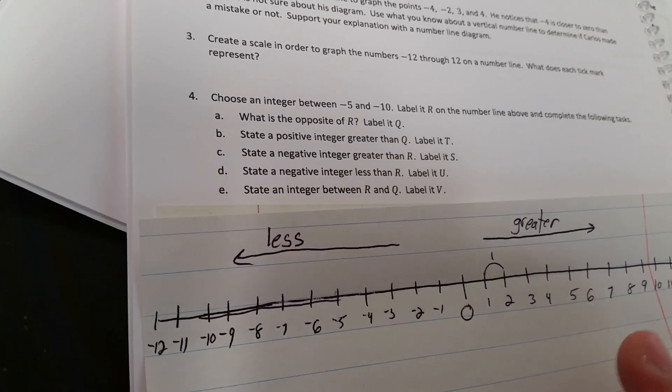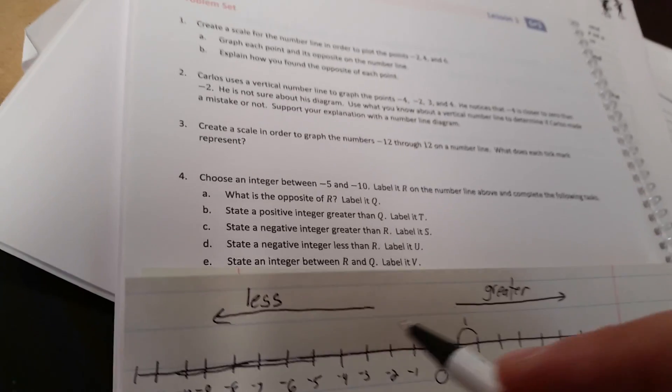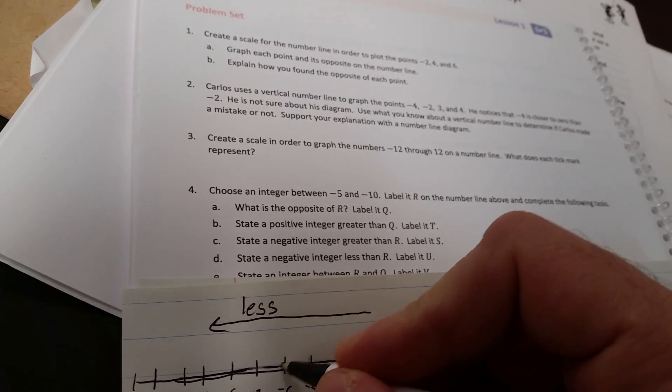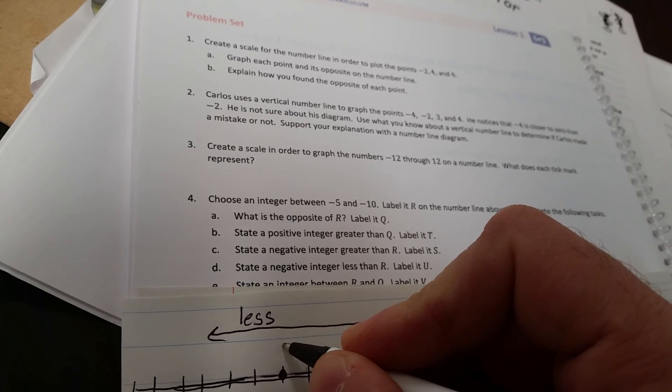Let's look at question 4. It says, choose an integer between negative 5 and 10, label it r on the number line above, and complete the following tasks. All right, so we're going between negative 5 and negative 10. I'm going to choose negative 6, and we're going to label that r.